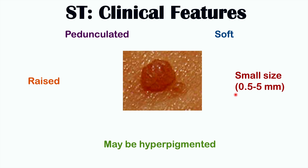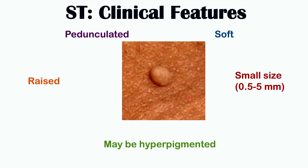Here are additional examples of skin tags. They are raised and pedunculated, with a thinner underlying stalk connecting them to the underlying skin. They are soft, most often ranging from 0.5 to 5 millimeters in size, and most often hyperpigmented, although they might not be.